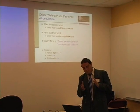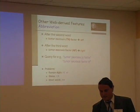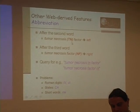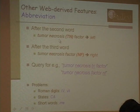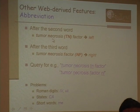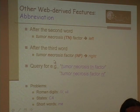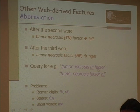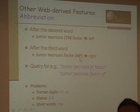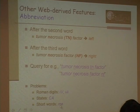Another highly accurate feature: abbreviations. For 'tumor necrosis factor,' finding 'tumor necrosis TN factor' means the first two are abbreviated together, predicting left bracketing. Finding 'tumor necrosis factor NF' predicts right bracketing. You can query Google for these patterns — you don't have the uppercase or parentheses, but it still works. Problems arise with state names, short words, or Roman numerals, but most of the time it works.